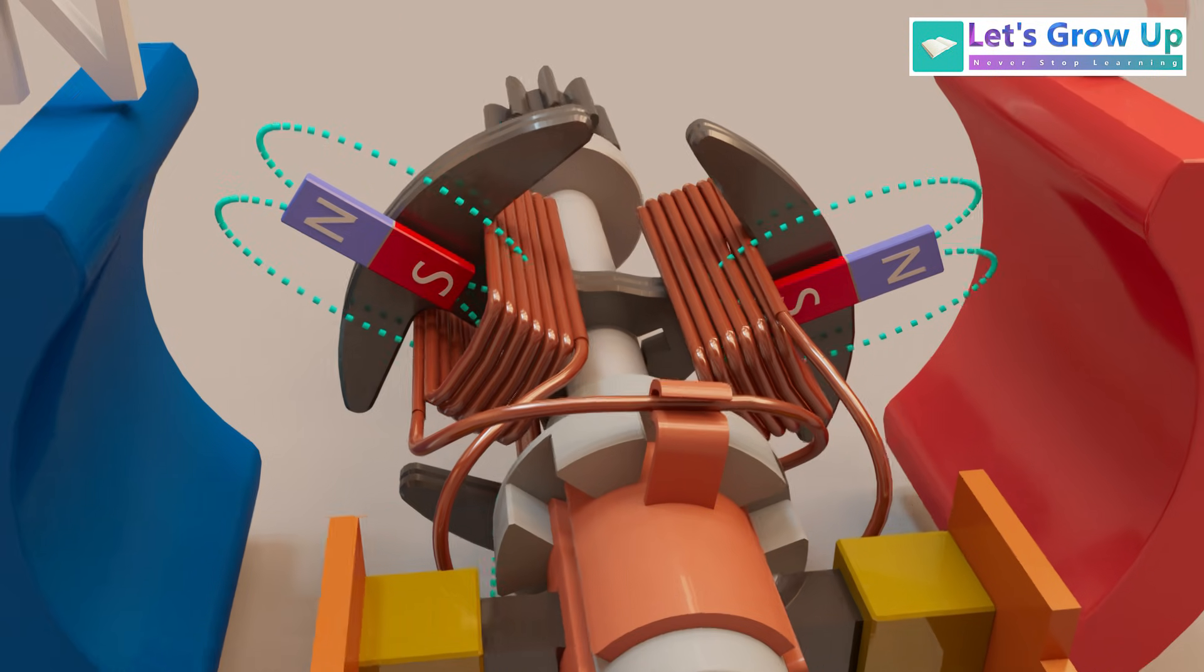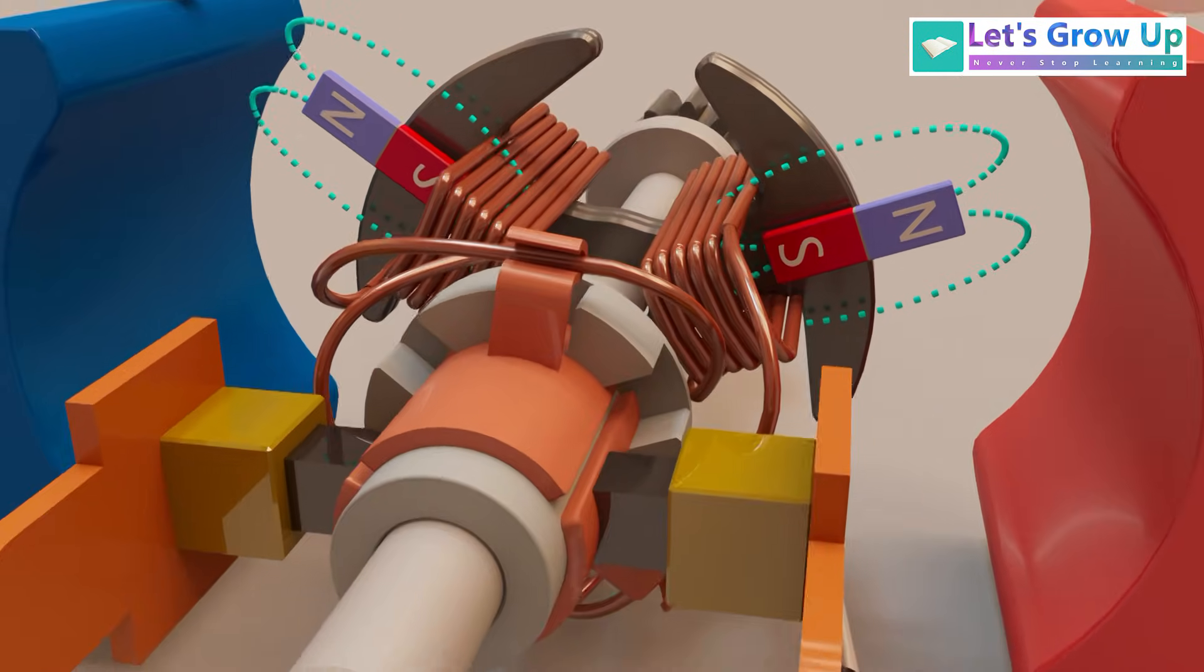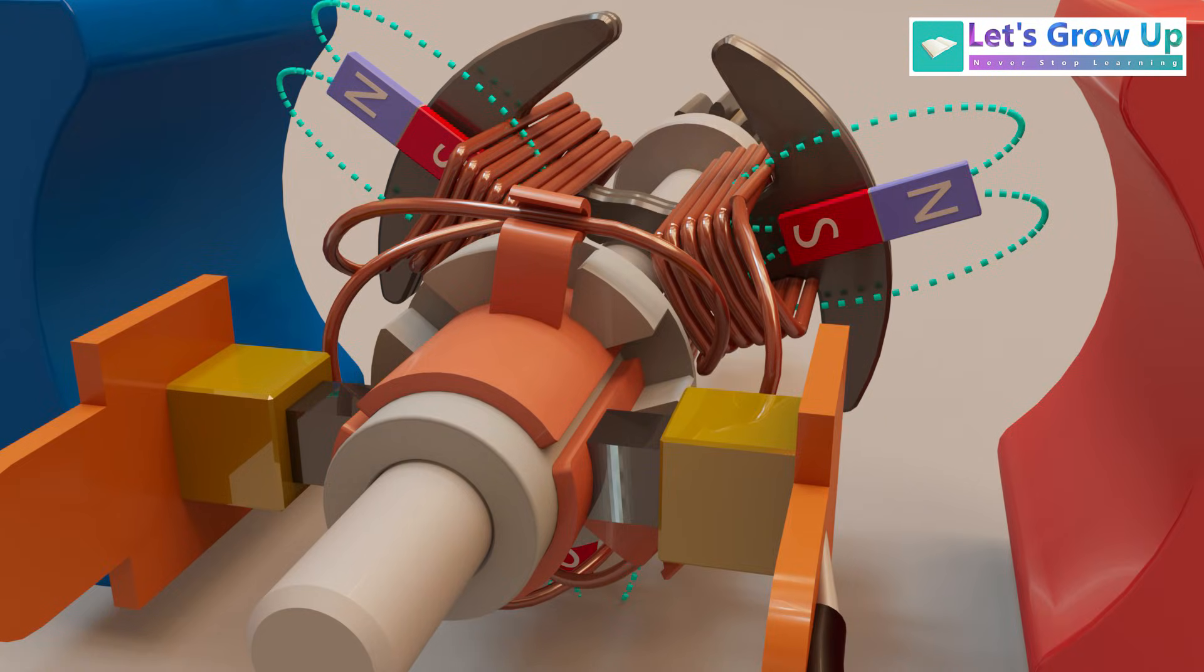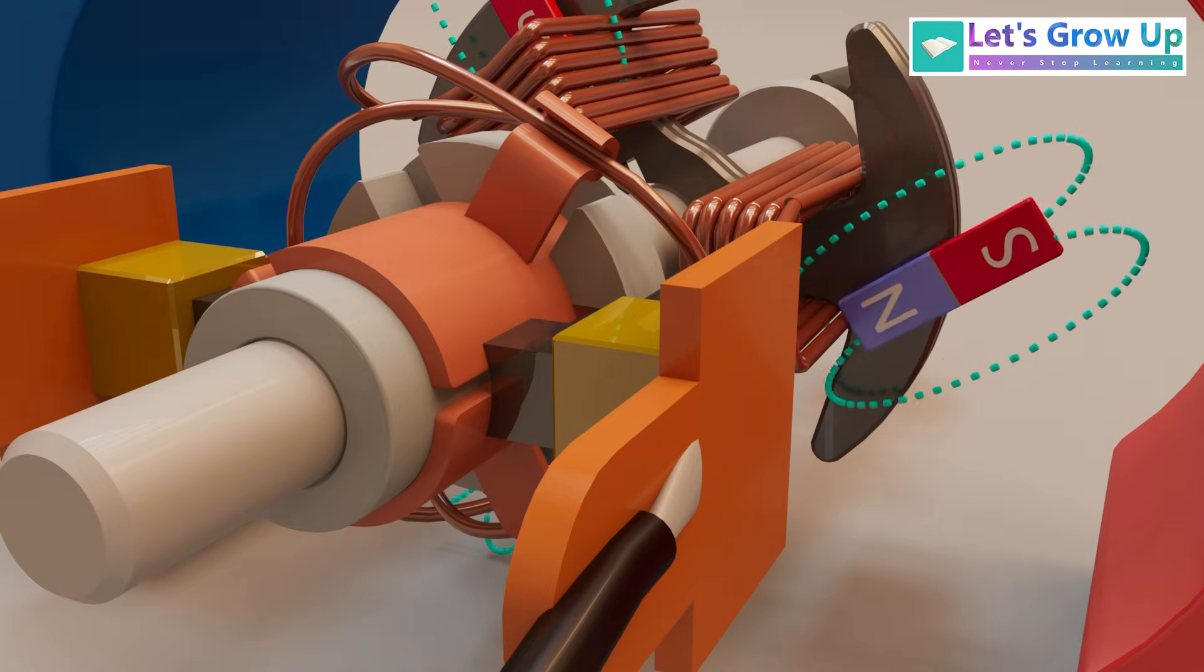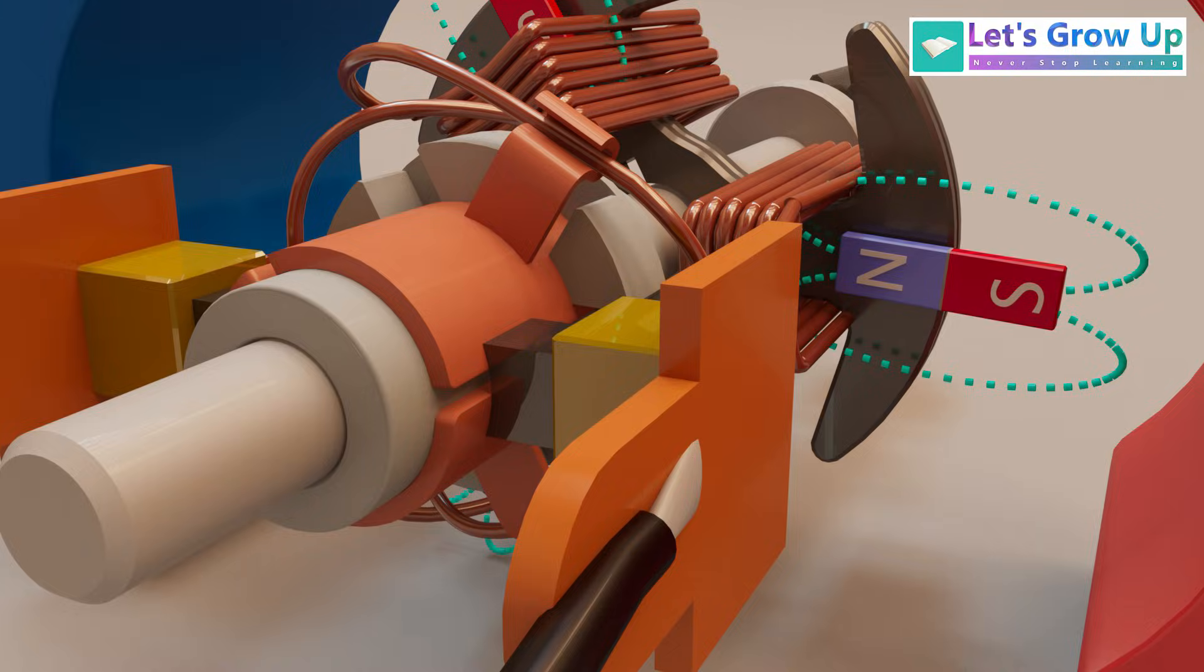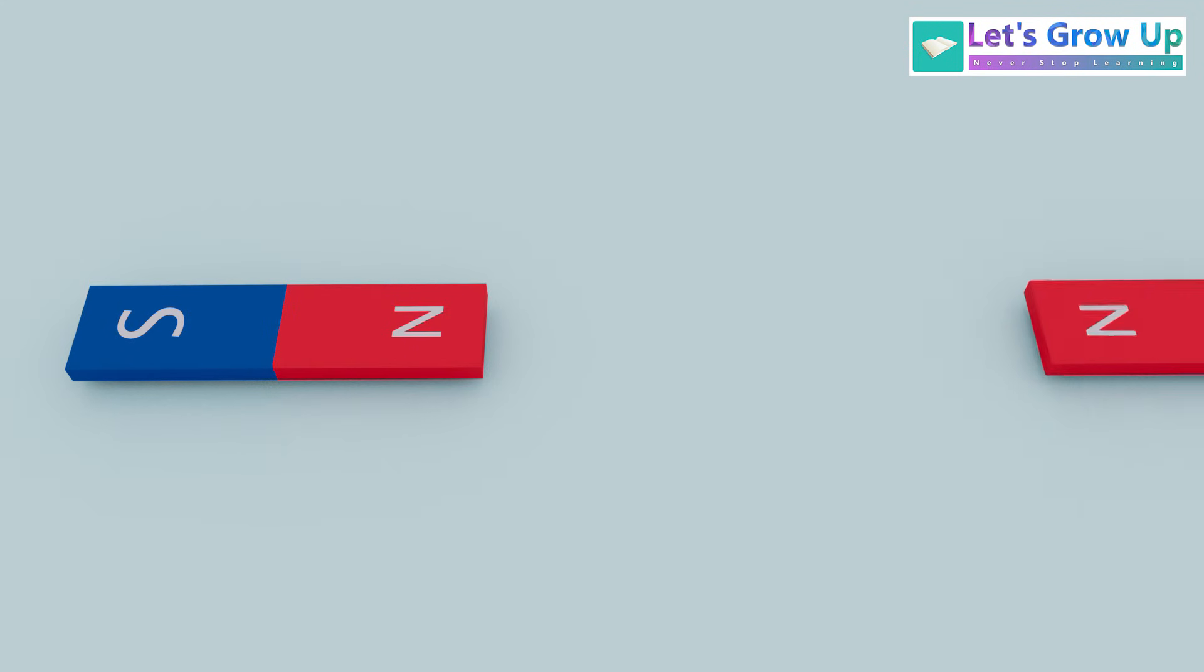The next coil, also connected to the commutator and carrying current, will similarly create its own magnetic field with a corresponding pole orientation relative to the stator magnets. Just think about the magnets. The same poles push away from each other, right?